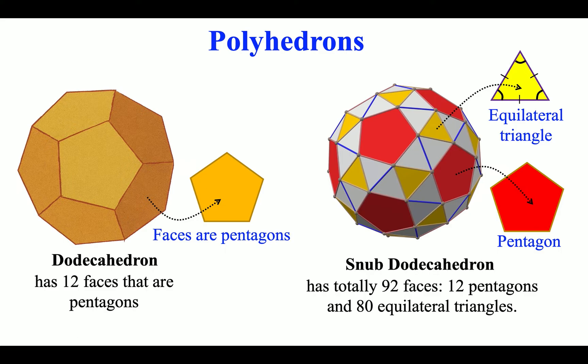Snub dodecahedron has totally 92 faces: 12 pentagons and 80 equilateral triangles.